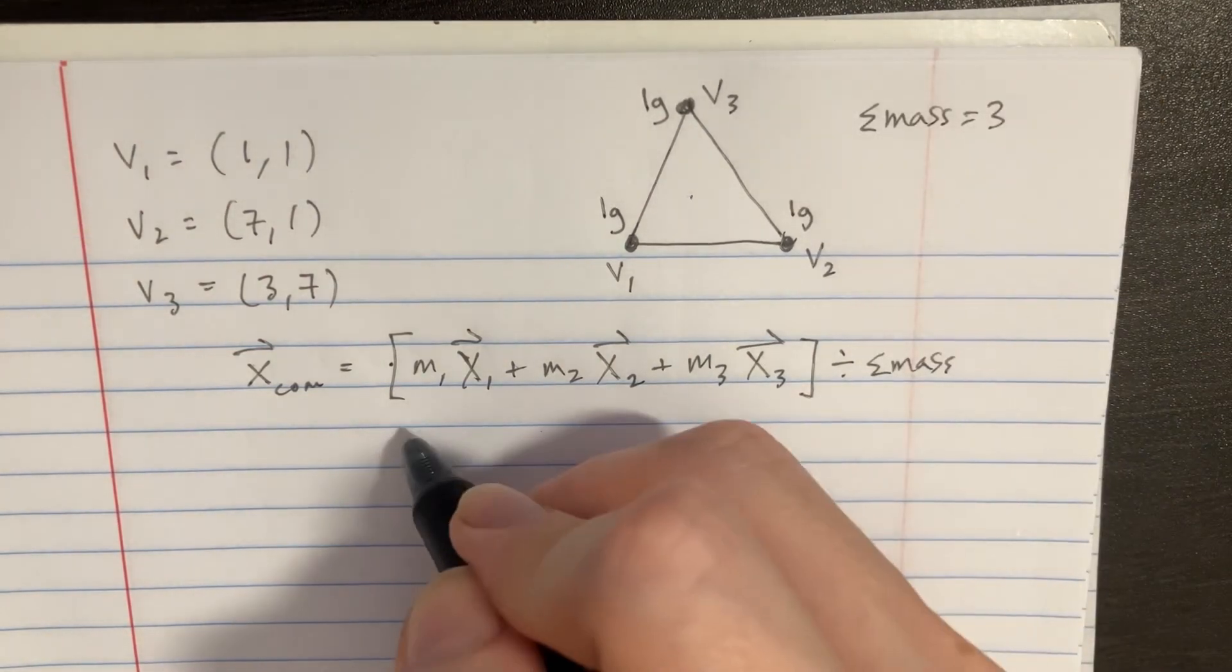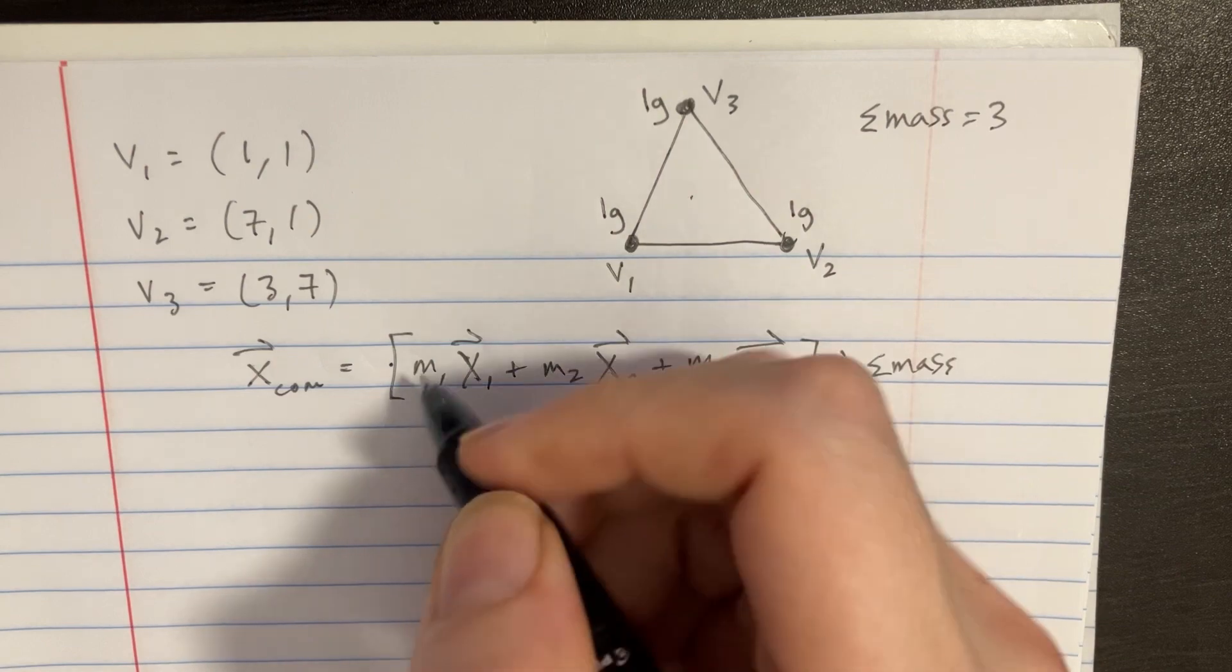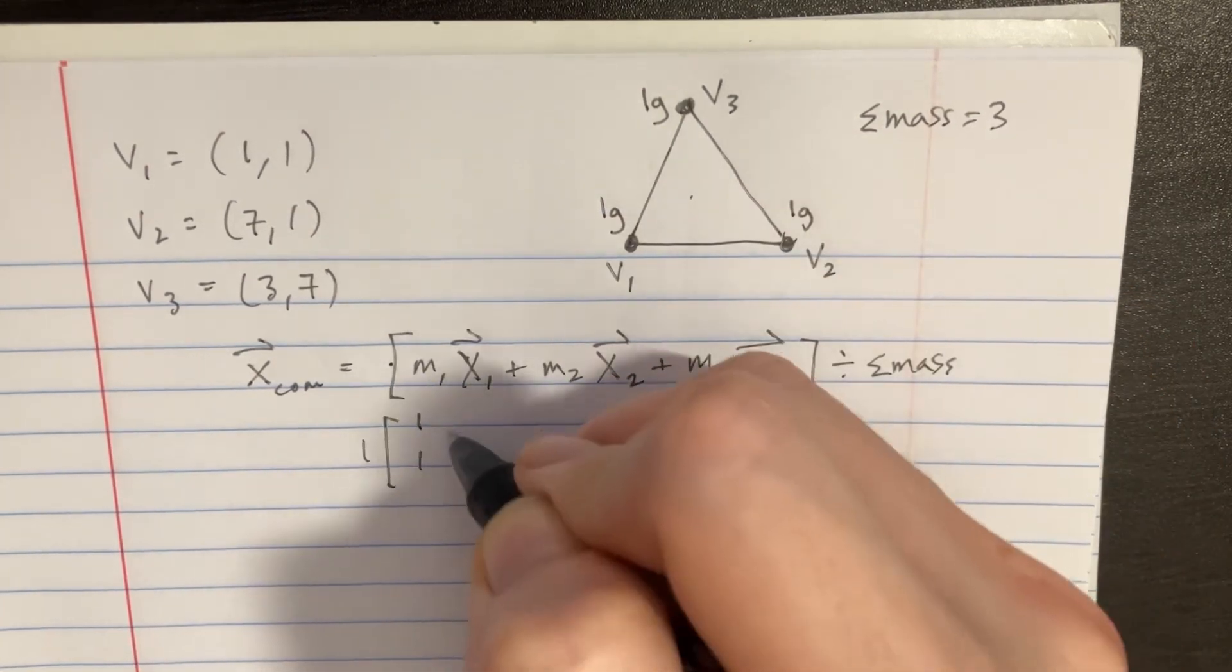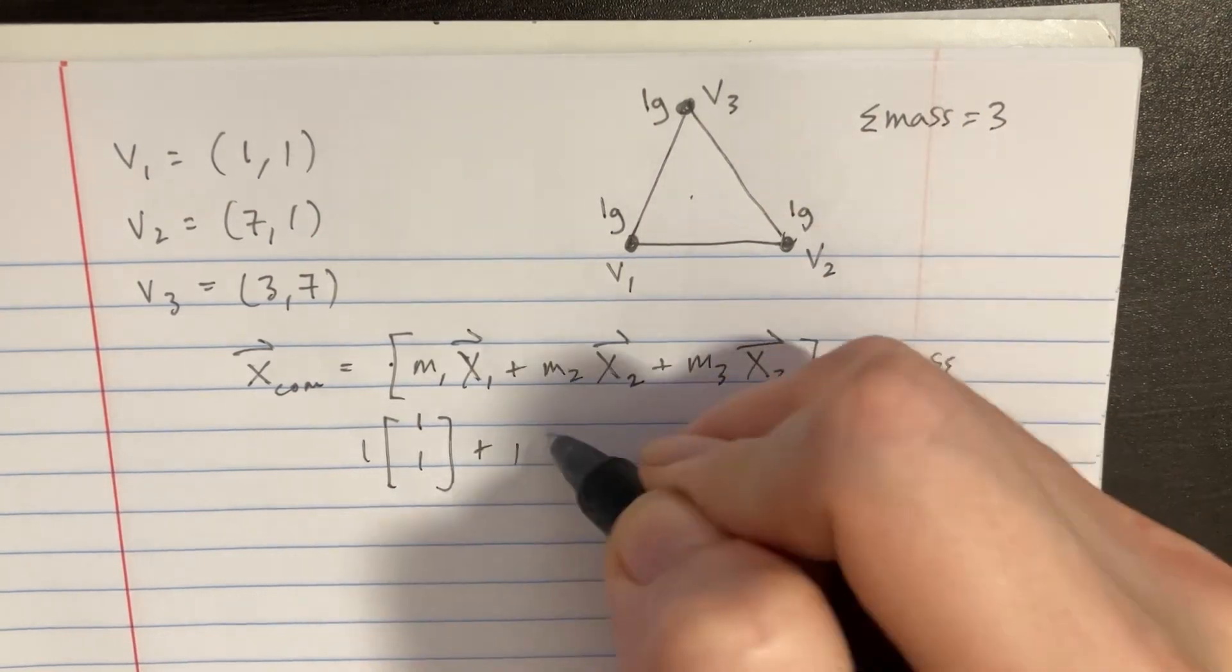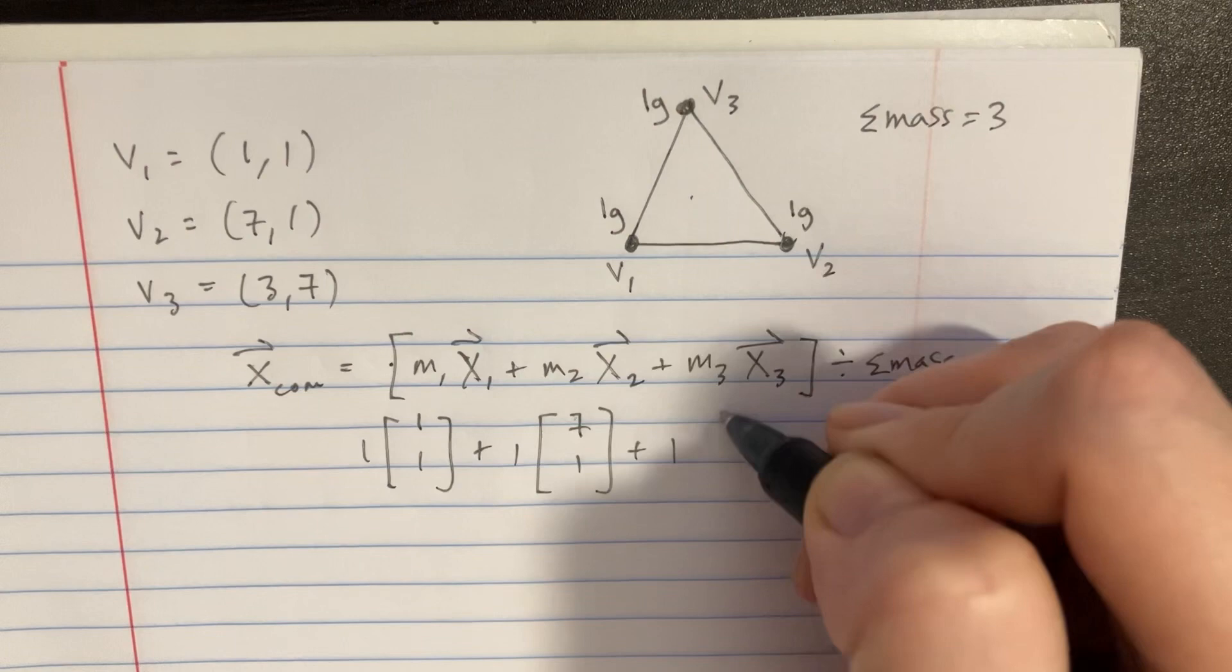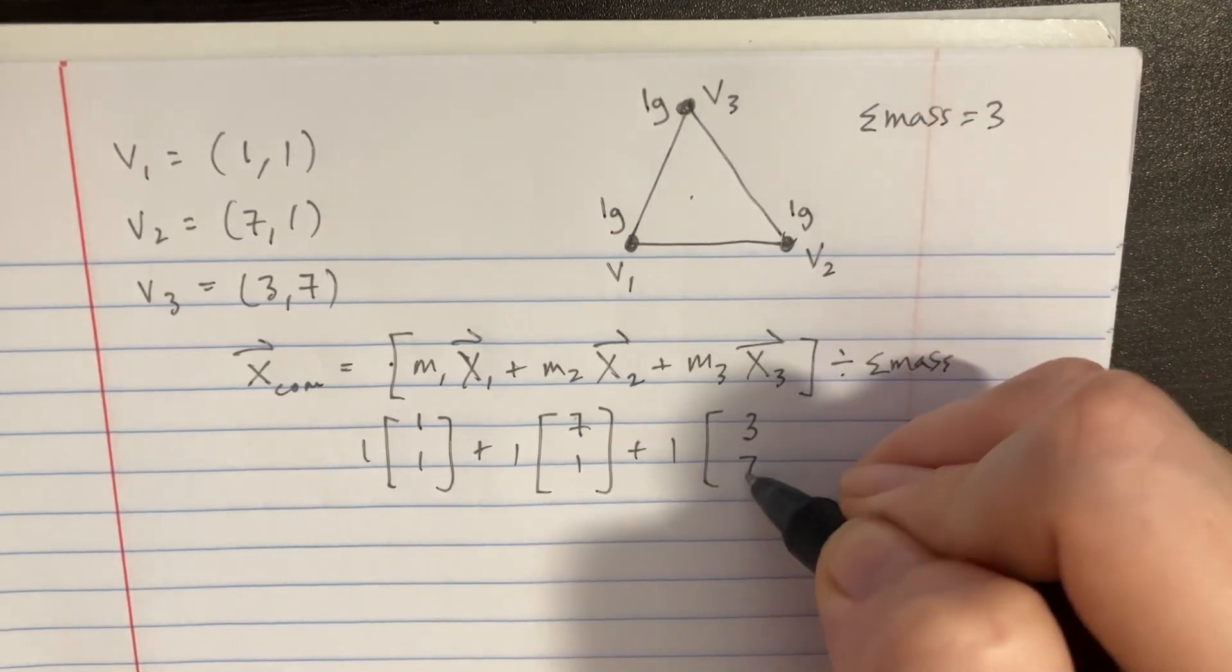Let's go ahead and try to do this. We basically just say, well, there's 1 times the (1,1) position. And then there's also another 1 here times the (7,1) position. And another 1 here, (3,7) here.